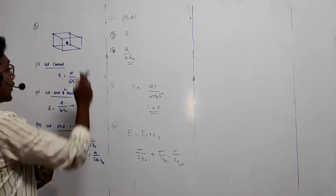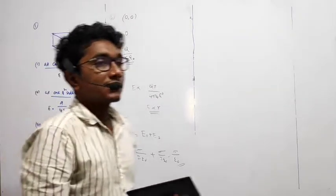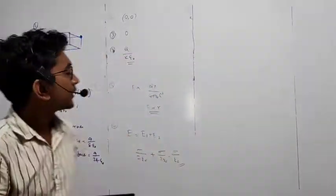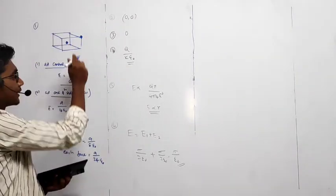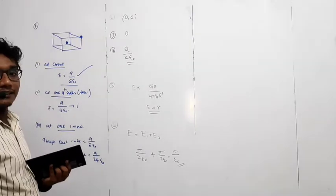Then at one of the corners, how much will be the electric field through each face? That is a common question. At the center, there are 6 faces, so each face will be Q by 6 epsilon 0.